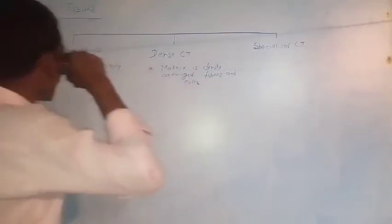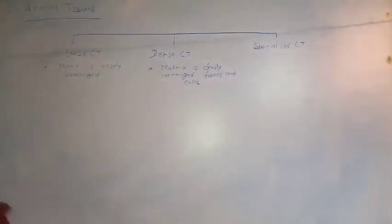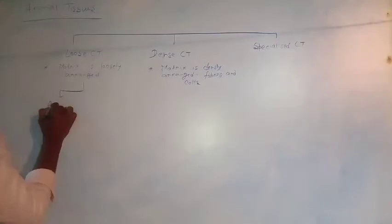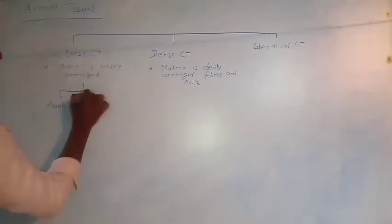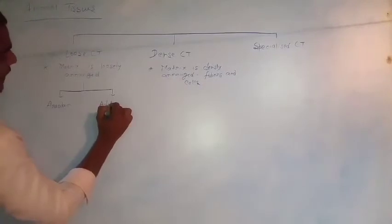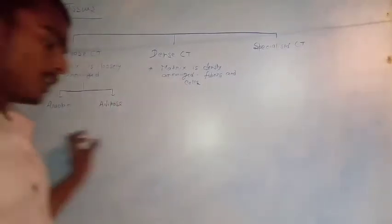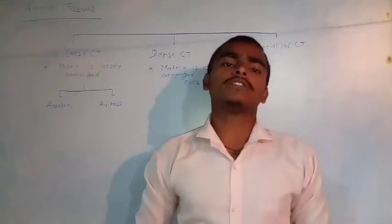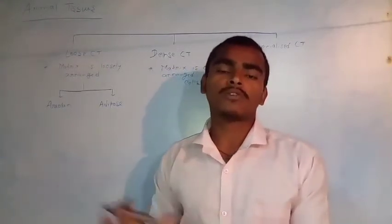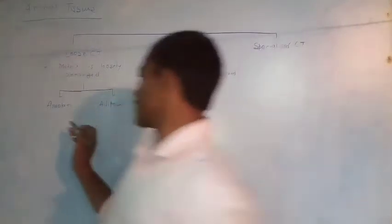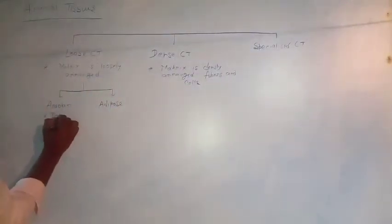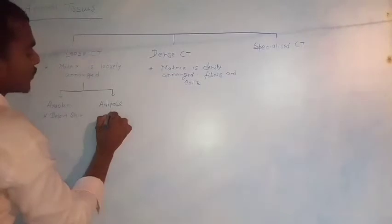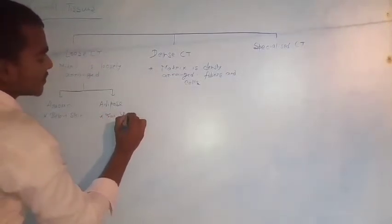Loose connective tissue is divided into two categories: areolar and adipose. Areolar connective tissue is present just below the skin. Adipose tissue is also present below the skin but is responsible for fat storage — it stores fat molecules.